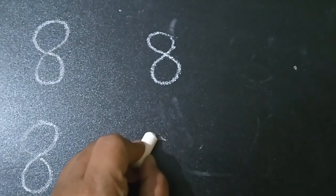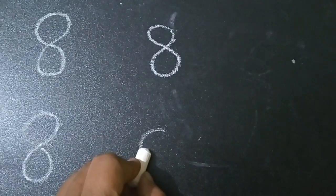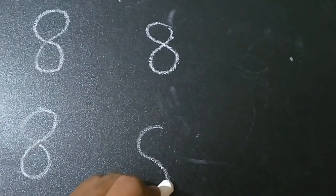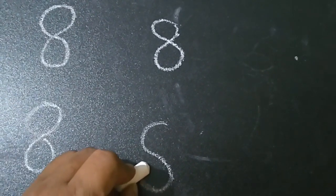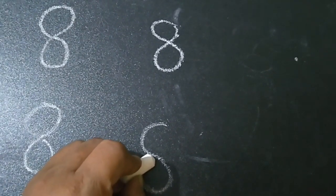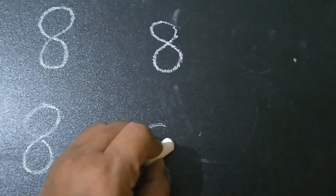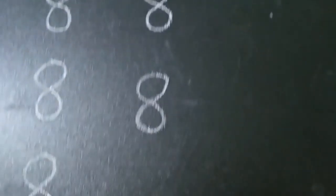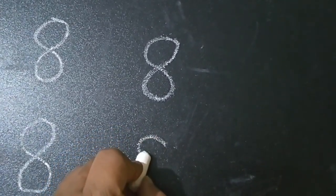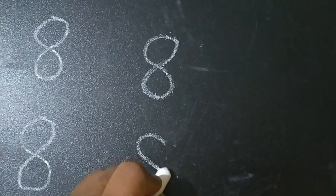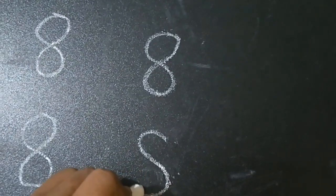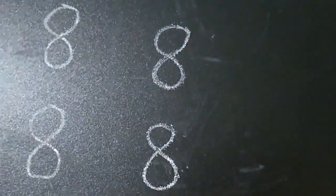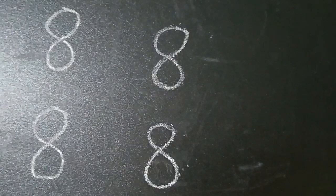Again make a curve, come down, make a curve, turn, make a curve and join. Number 8.